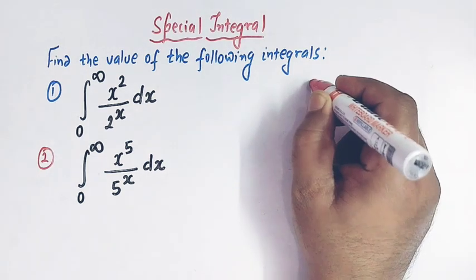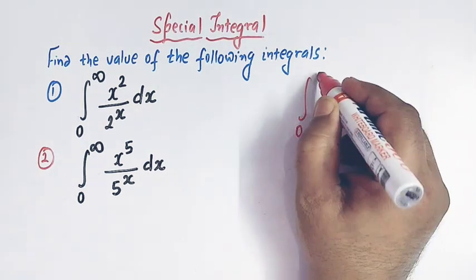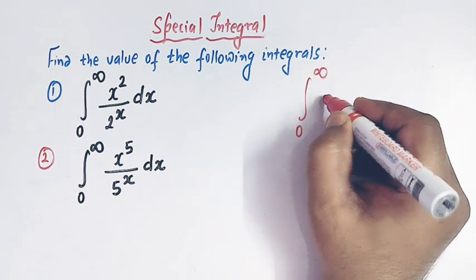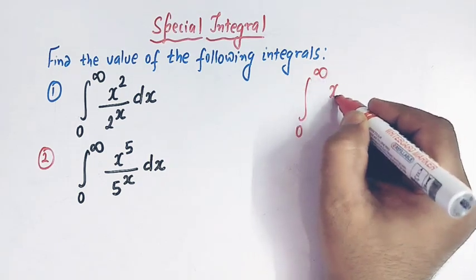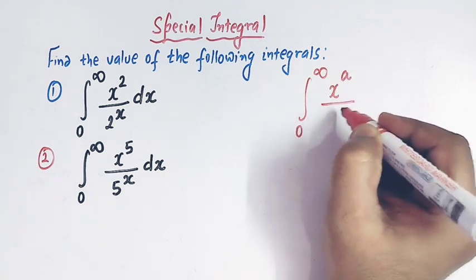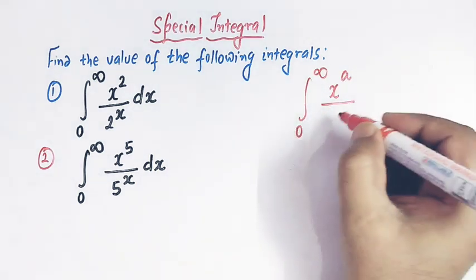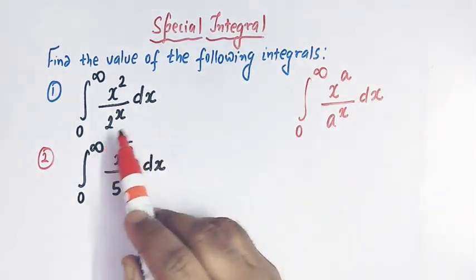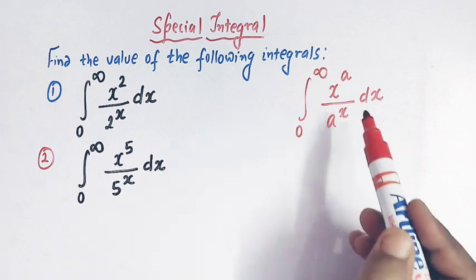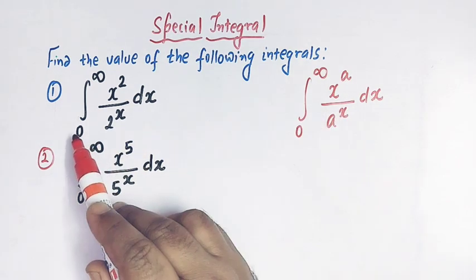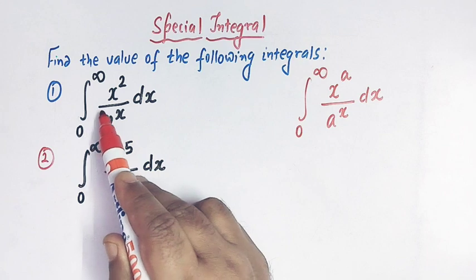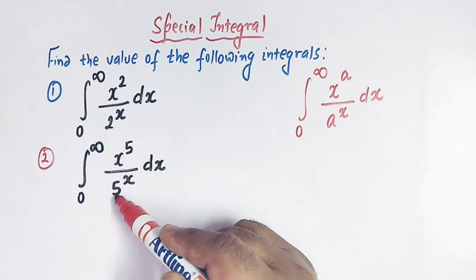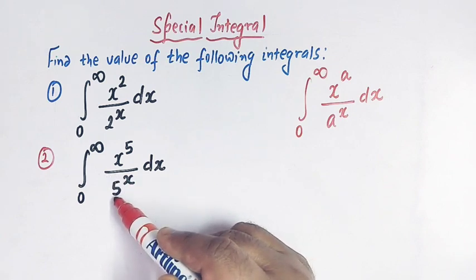Suppose we have to find the value of this type of integral where we have the limits from 0 to infinity, and we have x raised to some number a in the numerator, and in the denominator we have a raised to x. We can see that these two integrals are similar to this general integral — here we have 0 to infinity, x squared divided by 2 raised to x.